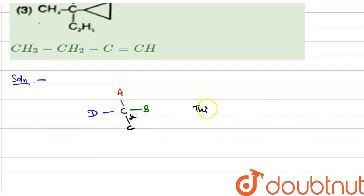So this carbon is chiral and this compound can show optical activity.